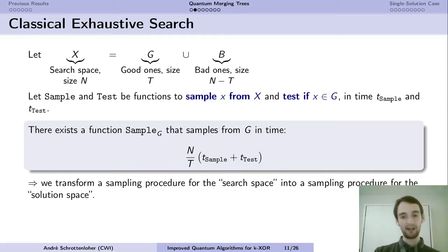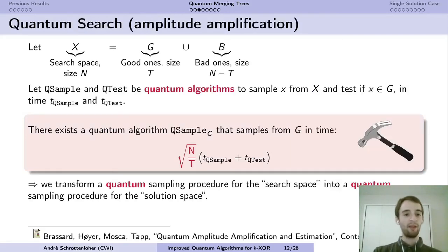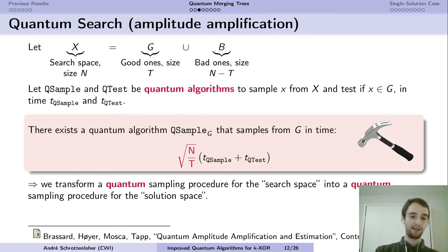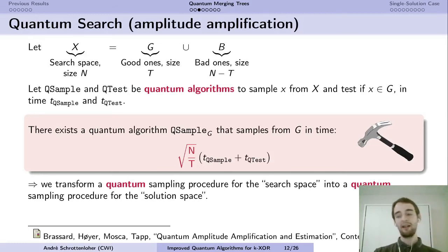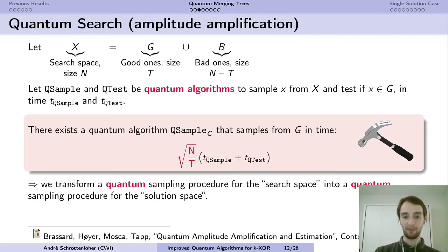Quantum search does exactly the same thing, except everything becomes quantum. You assume a quantum algorithm that samples from the search space and a quantum algorithm that tests if an element is good. This gives the well-known square root speedup: instead of needing N/t iterations, you only need √(N/t) iterations.